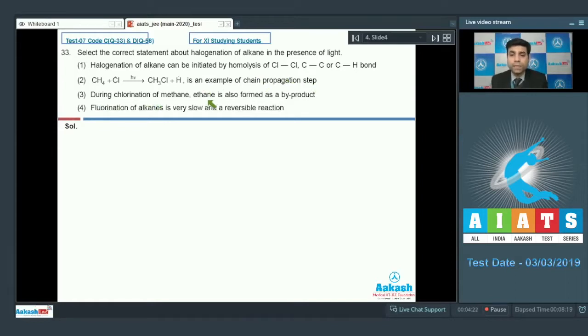Third is during chlorination of methane, ethane is also formed as a byproduct. Fourth is fluorination of alkane is very slow and a reversible reaction.